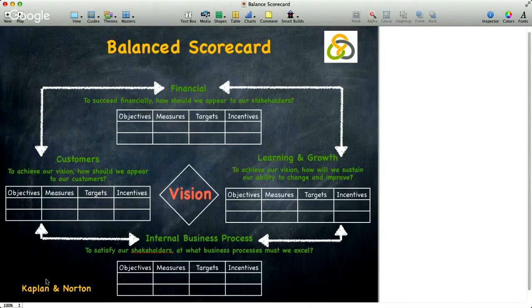The process perspective: to satisfy our stakeholders, what processes must we be brilliant at? Metrics that are based on the business process allow managers to know how efficiently the business is running and whether the products or services conform to customers' requirements.